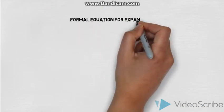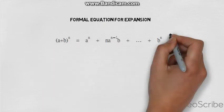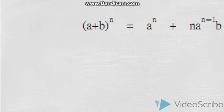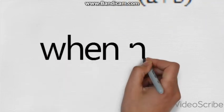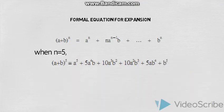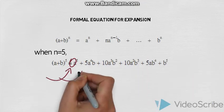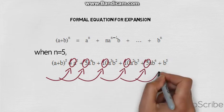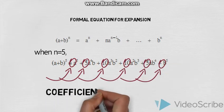The formal equation for expansion which he develops is (a+b) to the power of n. As an example, when n equals 5, we can see that in front of each term there are numerical coefficients, which we call binomial coefficients.